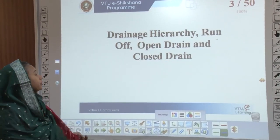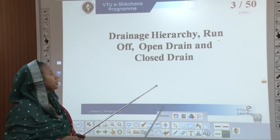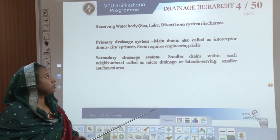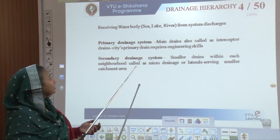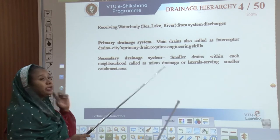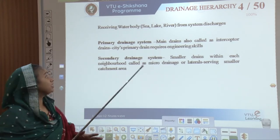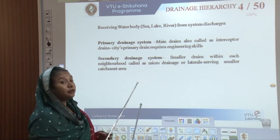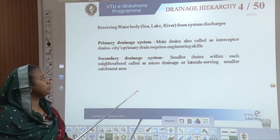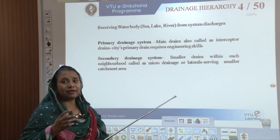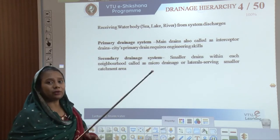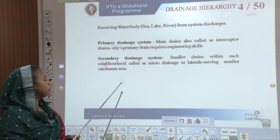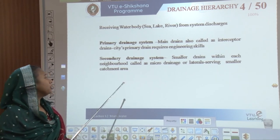What is drainage hierarchy? It is the hierarchy involved in stormwater drainage along with its runoff and closed and open drain. Stormwater is the receiving water body of rainwater from many systems, and all of these systems discharge into the sea, lake, or river. The primary drainage system is also called the main drain or intercepted drain because it carries the city's primary drain and must be designed with high-quality engineering skills. The secondary drainage system consists of much smaller drains within the neighborhood, called micro drainage or laterals, which serve smaller catchment areas.